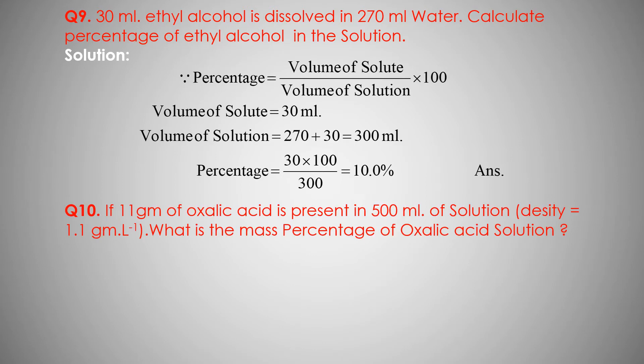Next, question number 10. If 11 gram of oxalic acid is present in 500 milliliter of solution, and density is 1.1 gram per liter — what is the mass percentage of the oxalic acid solution?